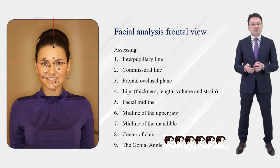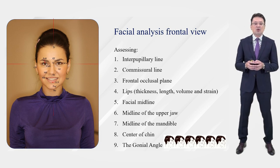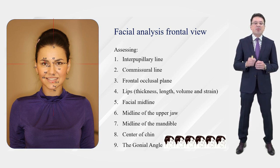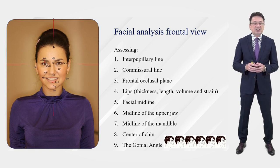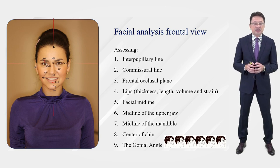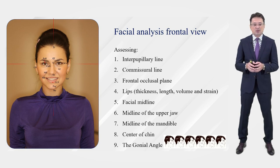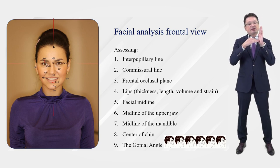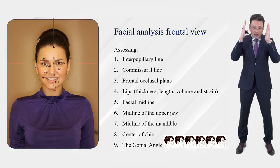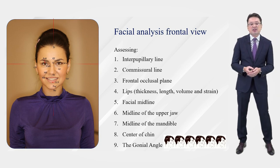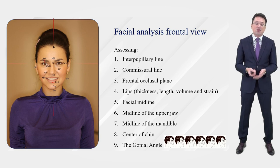The center of the chin and the gonial angle are also important landmarks. The gonial angle determines the type of face — or rather, the type of facial height. If the gonial angle is large, the face is longer. If it is closer to a right angle, the face shape is more square. The shape of teeth is also selected depending on the shape of the head.